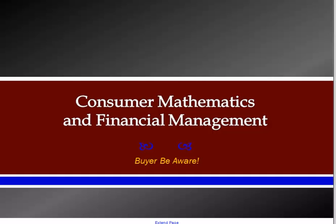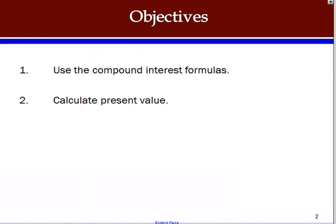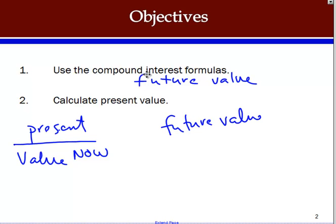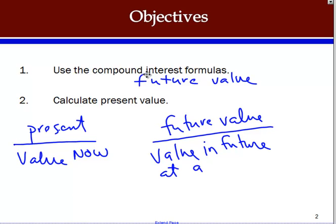In this lesson, we'll talk about some concepts from consumer mathematics and financial management. The objectives we'll cover are: number one, we'll learn how to use the compound interest formulas, and number two, we'll calculate present value. When we're using the compound interest formula, we're calculating something called future value. We're interested in what money is worth in the future and what money is worth now. Present value is the value now, and future value is the value in the future at some known time. We'll use the compound interest formulas to help us calculate both of these.